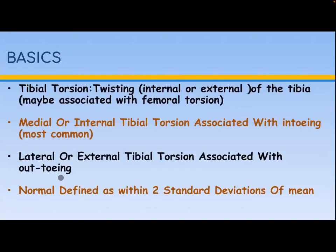Basics: tibial torsion — twisting, internal or external, of the tibia — may be associated with femoral torsion. Medial or internal tibial torsion is associated with in-toeing and is most common. Lateral or external tibial torsion is associated with out-toeing. Normal is defined as within two standard deviations of the mean.